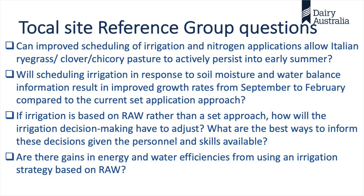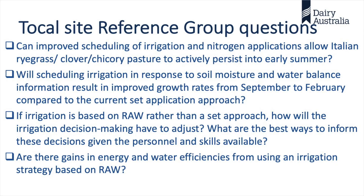These are our research questions. Can improved scheduling of irrigation and nitrogen applications allow the pasture mix to actively persist into early summer? Will scheduling irrigation in response to soil moisture and water balance result in improved growth rates compared to the current set irrigation approach? If irrigation is based on the RAW, how will that affect the decision-making process? And what skills are necessary that Matt might need to relay to staff? Ultimately — what are the gains in doing this?